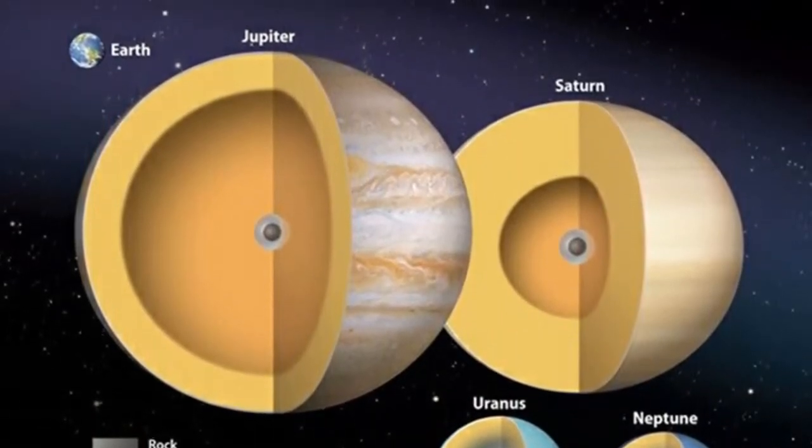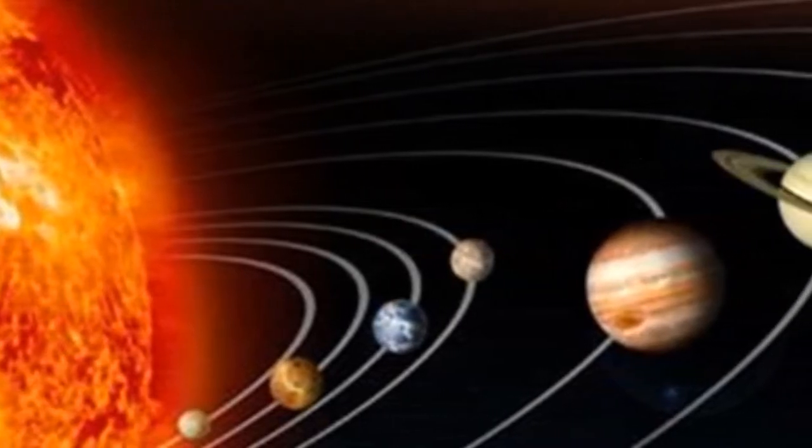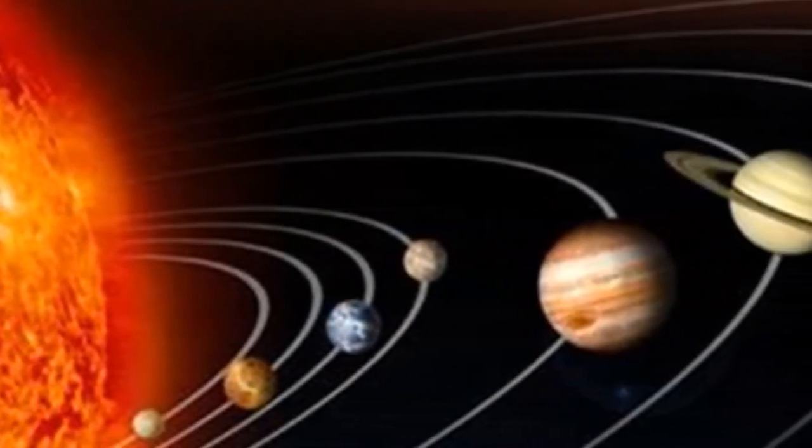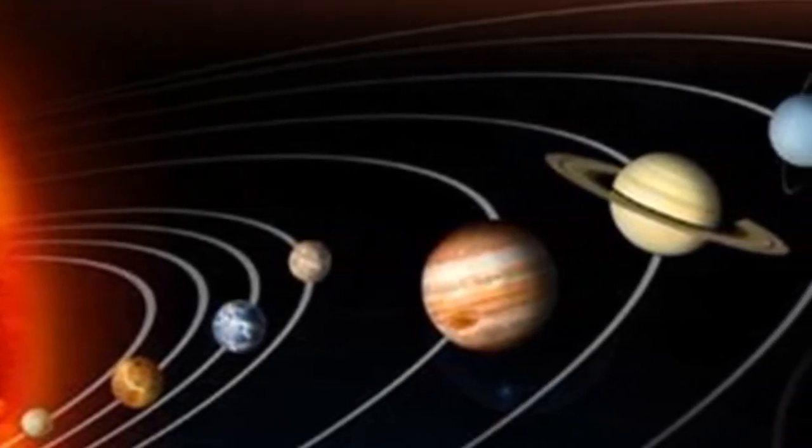The Jovian planets, on the other hand, contain large amounts of gases, hydrogen and helium, and ices, mostly water, ammonia, and methane. This accounts for their low densities.